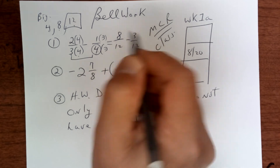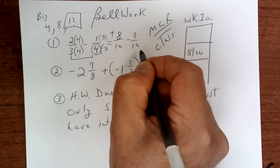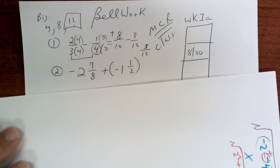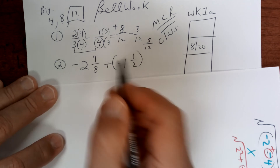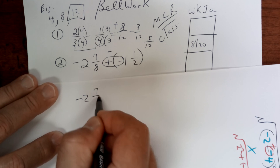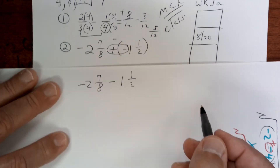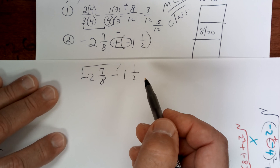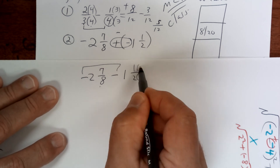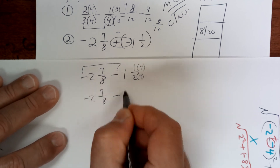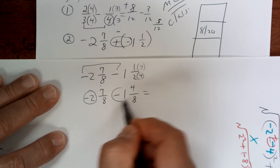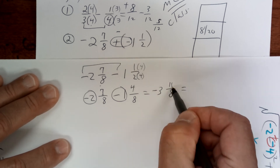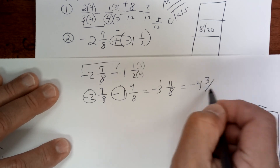Minus 3 over 12 — you have more positives, so your answer is 5 over 12. This next one is different. A positive times a negative is negative. Since the signs are the same, I'll make my denominator 8. So I get negative 2 and 7 over 8, minus 1 and 4 over 8. Negative 2 and negative 1 is negative 3. Seven plus 4 is 11 over 8. Eight goes into 11 one time, so that's negative 4 with 3 left over — negative 4 and 3 eighths.